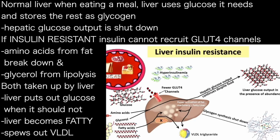However, in the setting of insulin resistance, the insulin cannot recruit the GLUT4 channels. The amino acids from muscle breakdown and the glycerol from lipolysis continue to be taken up by the liver. And in the midst of plenty of food coming in, the liver puts out glucose when it shouldn't. It also ramps up the fat manufacturing machinery to become fatty. The fatty acids picked up by the liver cannot get converted to ketones because of high insulin levels, and the liver spews out these triglyceride-rich lipoproteins.